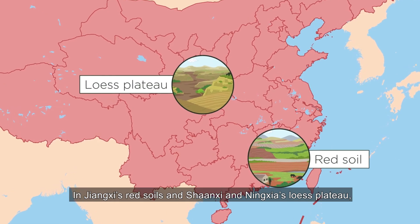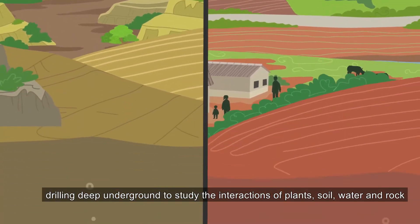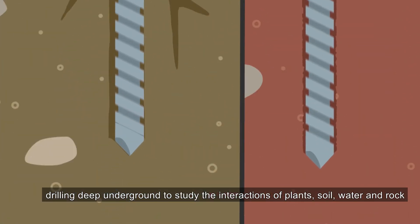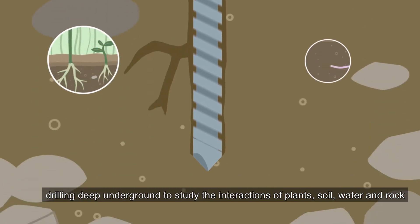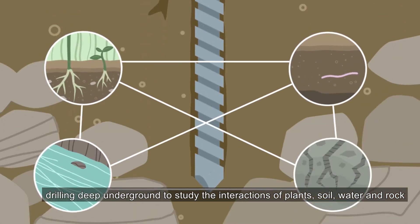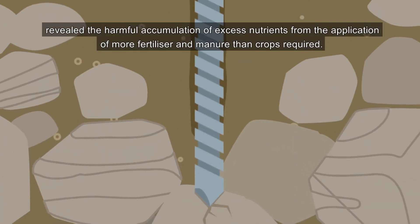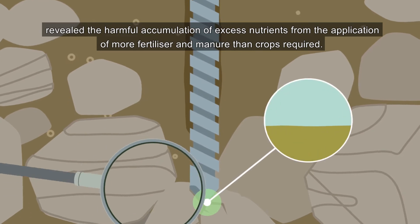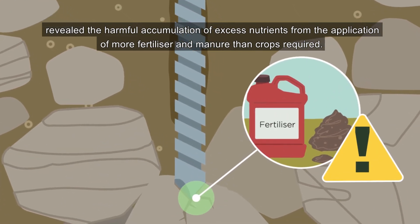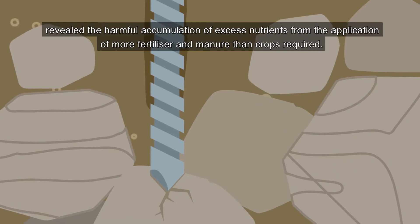In Jiangxi's red soils, and Shanxi and Ningxia's Loess Plateau, drilling deep underground to study the interaction of plants, soil, water and rock revealed the harmful accumulation of excess nutrients from the application of more fertiliser and manure than crops required.